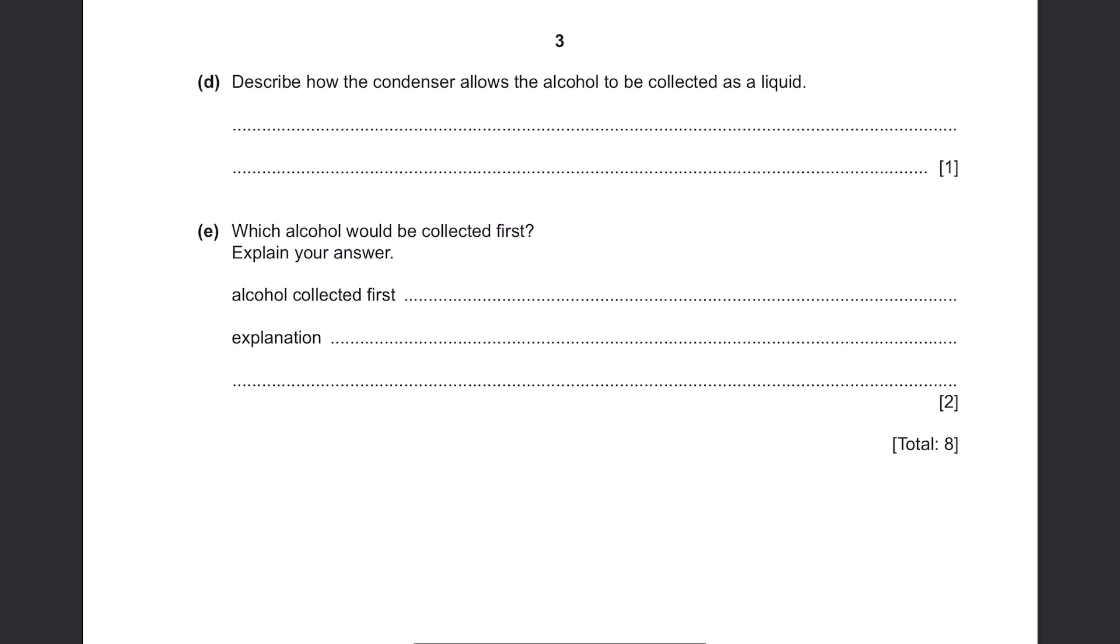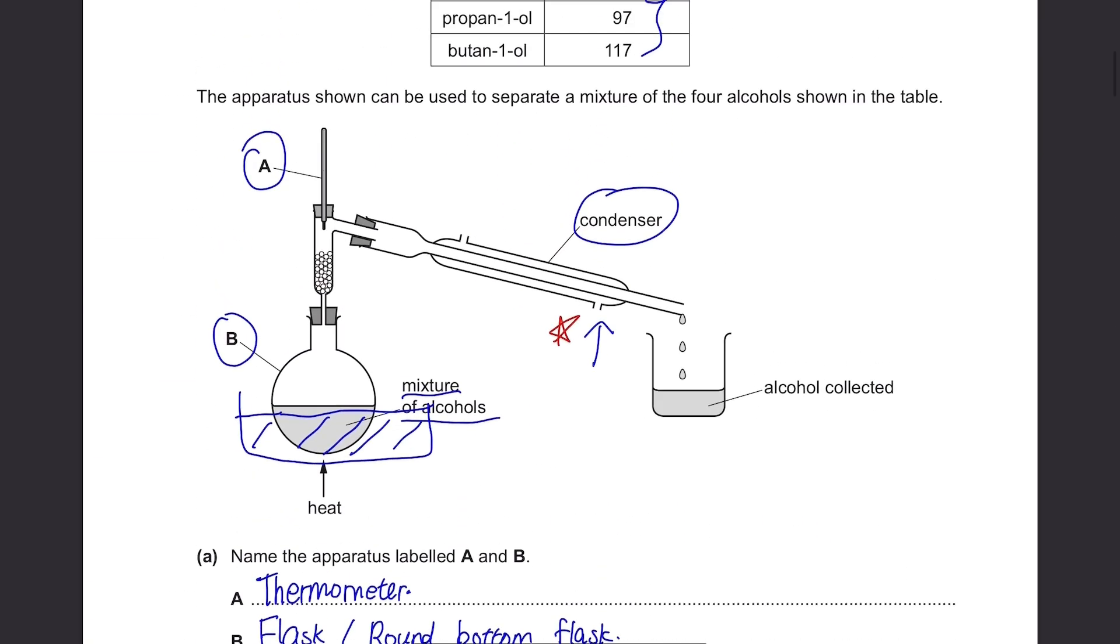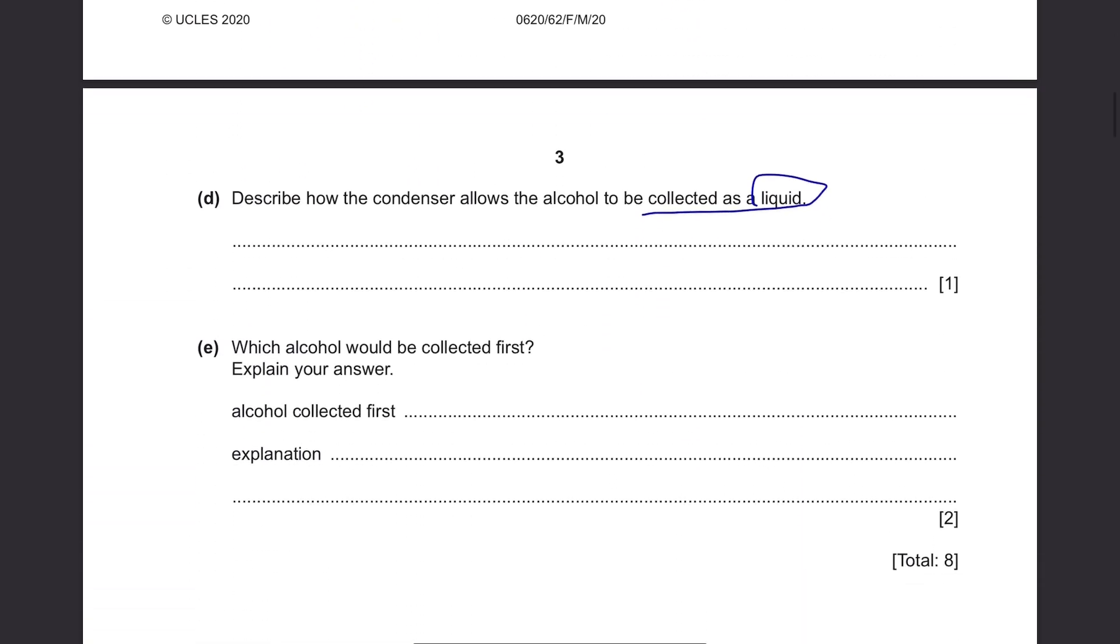Part D, describe how the condenser allows the alcohol to be collected as a liquid. Well, if you start heating up the alcohol over here, it's gonna start evaporating and travel through these as a gas molecule. But as it goes through the condenser, this condenser cools down the gas molecules. And when it's collected here, they're collected as liquid. In other words, the condenser cools the vapour and allows the alcohol to be collected as liquid.